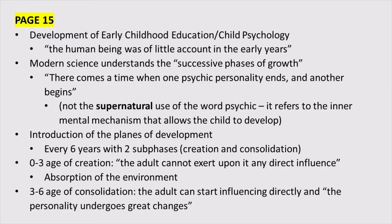When she starts talking about development and what's happening in the successive phases of growth, she also starts introducing the idea of the planes of development. When we talk about the planes of development, we're talking about every six years there is a new phase of growth: zero to six is the first plane, six to twelve is the second plane, twelve to eighteen is the third plane. She did label a fourth plane six years after that, but by then you're really dealing with an adult.